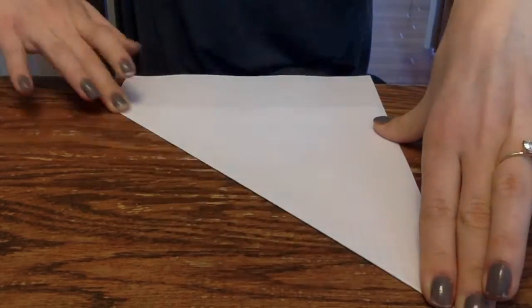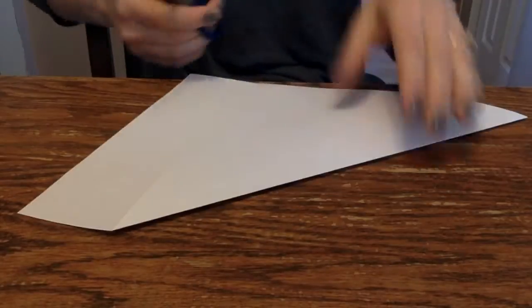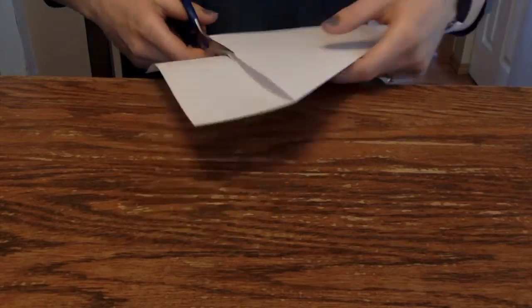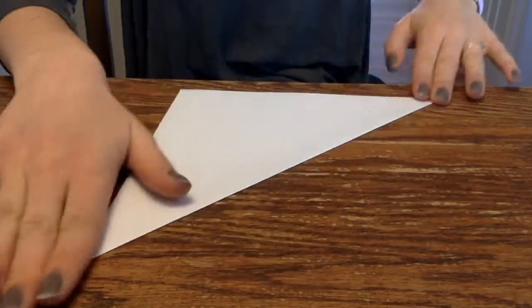Fold one corner all the way across to make a triangle. Cut the extra paper off your triangle and set that slip aside to use later. Now you have a square.